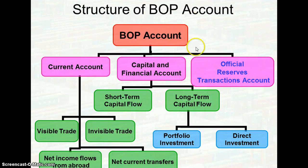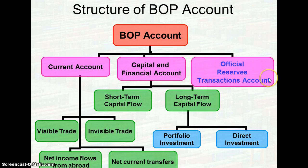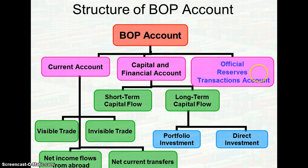Next, we will be looking at the third part under the balance of payment account. It is known as the official reserve transactions account. It indicates the net amount of international reserves that shift among central banks to settle international transactions, or between countries and the International Monetary Fund. It also shows the net change in government official reserves of gold and foreign currency.